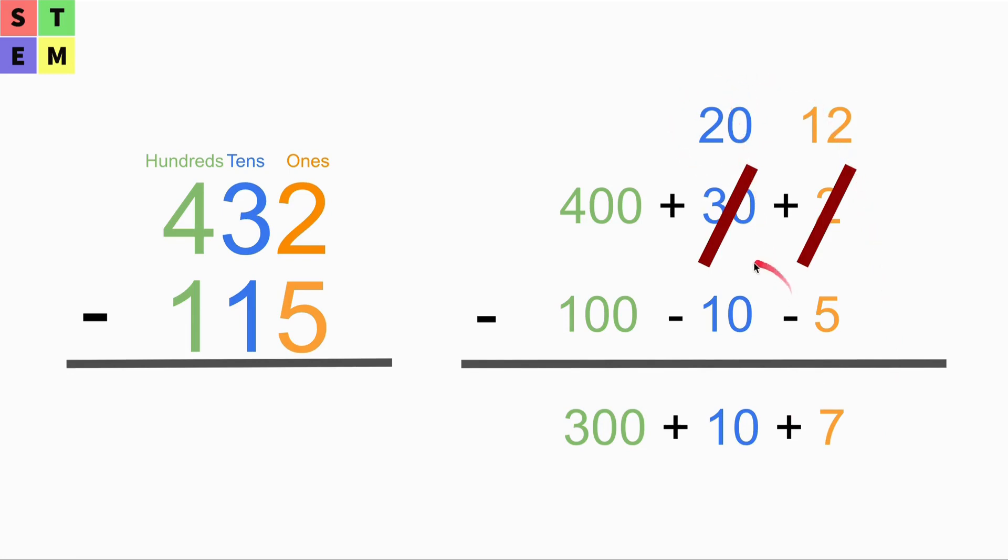Then we use 20 minus 10 at the tens place, and we will have 10 here as the result.